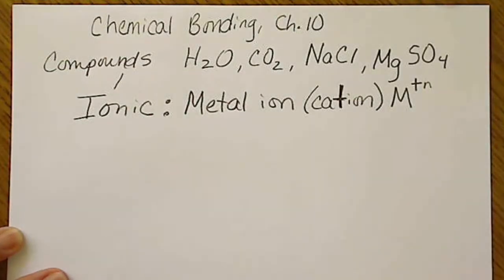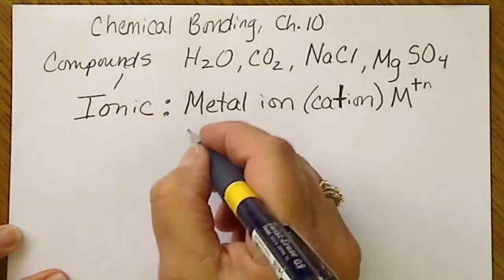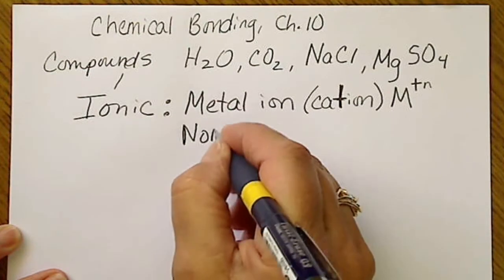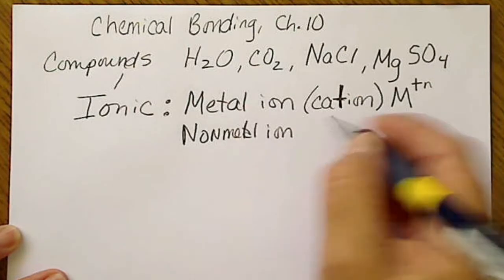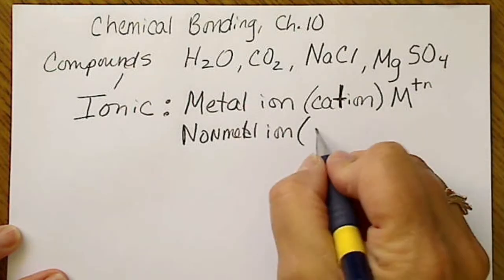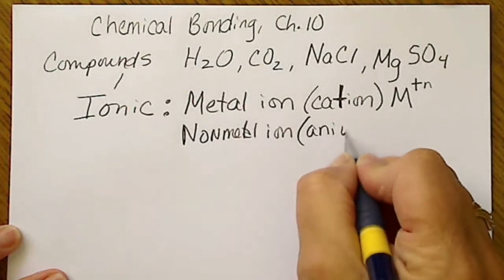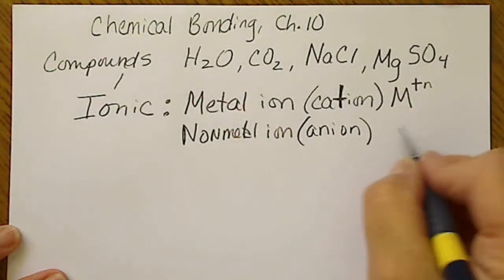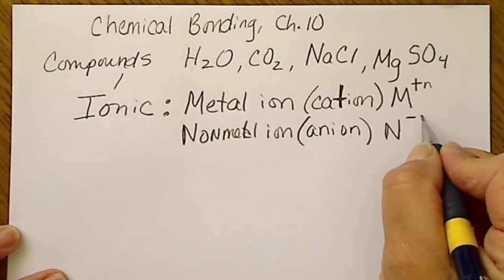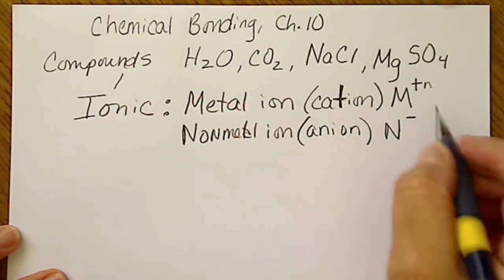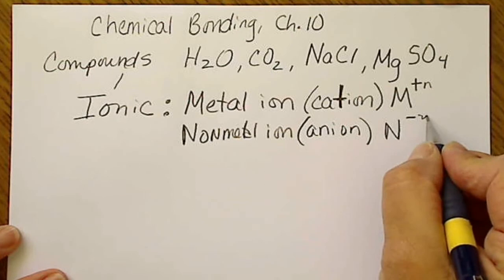And then the non-metal is also an ion but that's going to have a negative charge. So an anion, and I'm just going to put in for non-metal and it will be some minus charge.